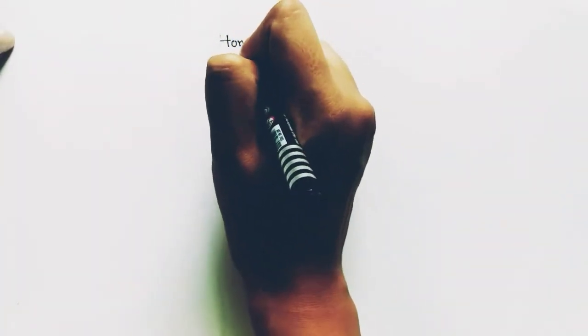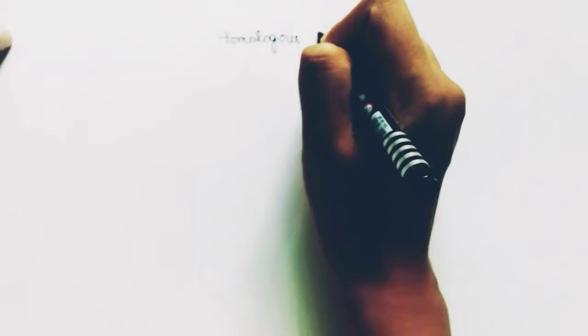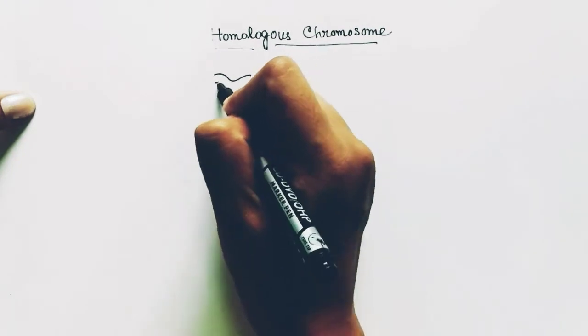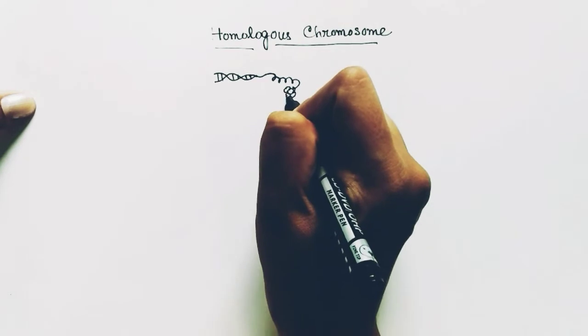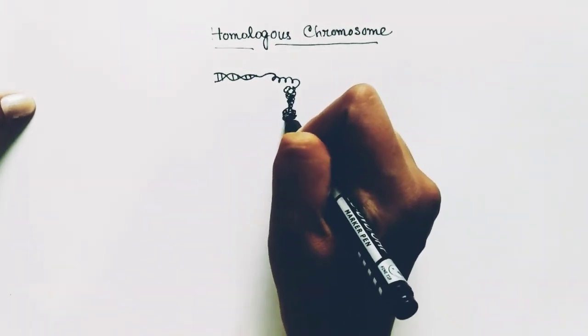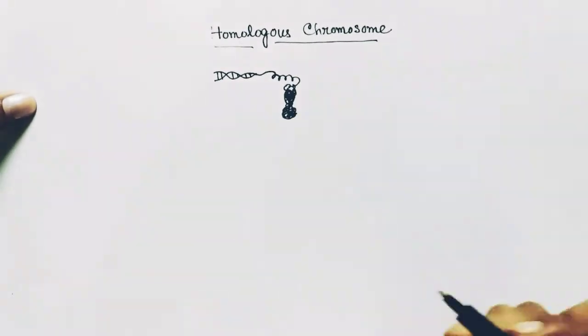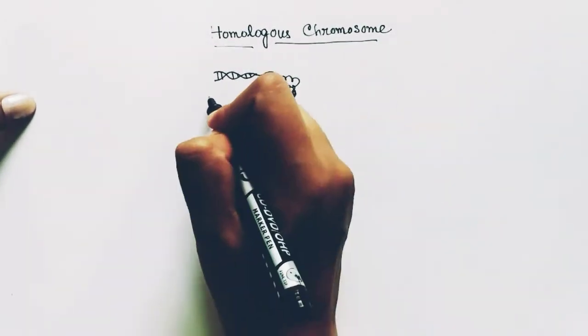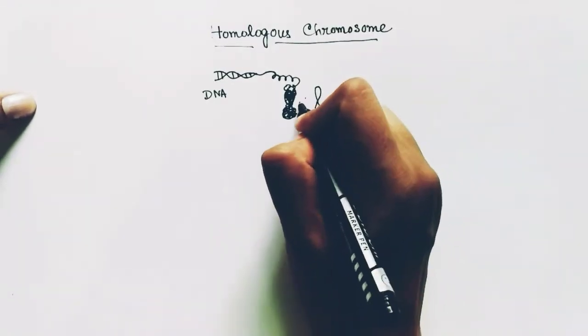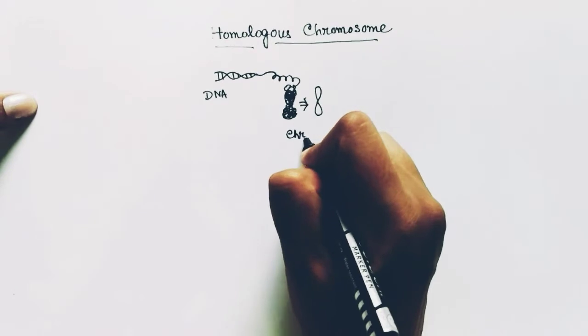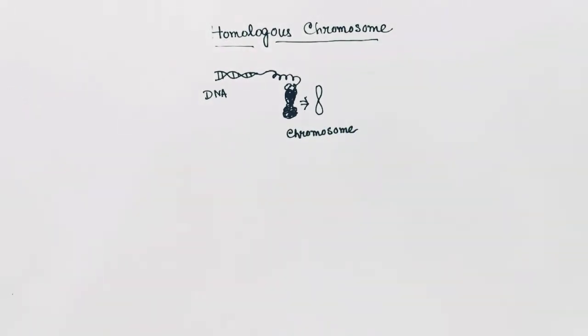Today we are talking about homologous chromosomes. Before understanding homologous chromosomes, let us understand what a chromosome is made up of. A chromosome is made up of a DNA thread that coils up and then supercoils to form the structure of the chromosome. So a chromosome is a supercoil structure of DNA, and DNA is the genetic material. We can draw a chromosome in a diagram as this.